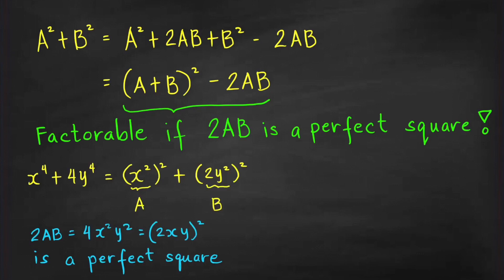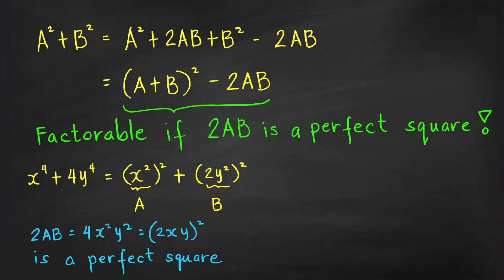Let's have an example. We have x raised to the 4th plus 4y raised to the 4th. This is a sum of two squares: the square of x squared plus the square of 2y squared. So A is x squared and B is 2y squared. Then 2AB equals 2 times x squared times 2y squared, which is 4x squared y squared — and that is a perfect square. It is the square of a polynomial with integer coefficients. So this expression is factorable and can be written as a product of two polynomials of lower degrees with integer coefficients. We will use completing the square.